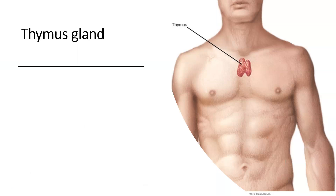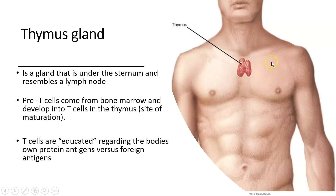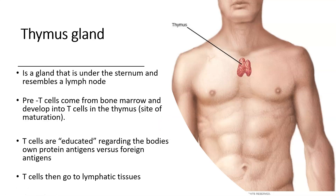The thymus is where T lymphocytes mature. T lymphocytes are made in the bone marrow along with B lymphocytes, but the T lymphocytes then move to the thymus where they mature. This maturation process is really important when we discuss the other type of immune response. The thymus is where T cells become educated regarding your body's own antigens — it ensures that we don't attack ourselves and that we only attack foreign antigens. These T cells then go to the lymphatic tissue where they circulate around the body.